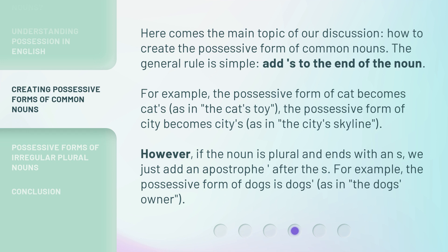Here comes the main topic of our discussion: how to create the possessive form of common nouns. The general rule is simple — add 's to the end of the noun. For example, the possessive form of 'cat' becomes 'cat's', as in 'the cat's toy.'